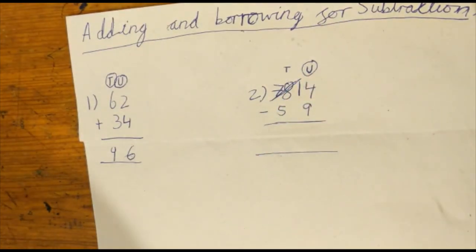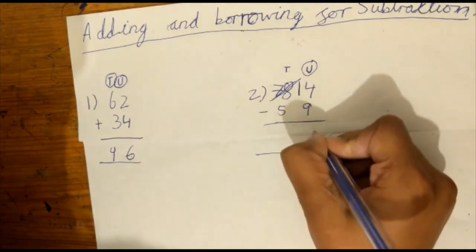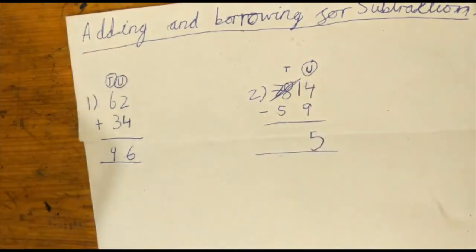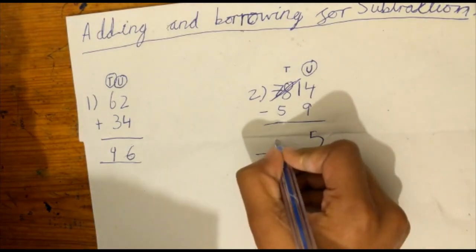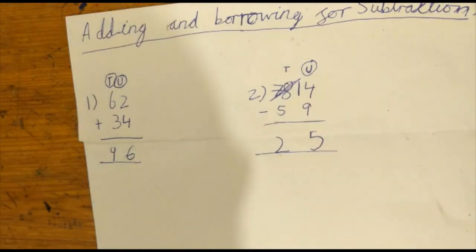Now 14 take away 9 is 5. So you're going to put 5 over here. 7 take away 5 is 2. So you're going to put 2 over here. And the answer is 25.